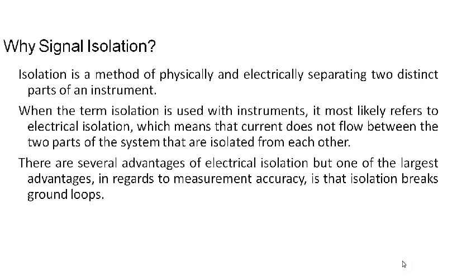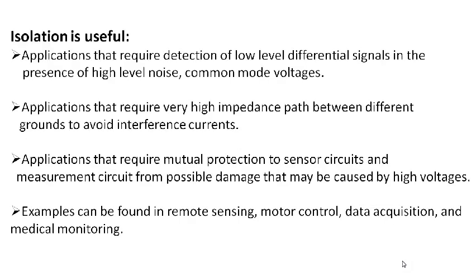Electrical isolation means there is no direct flow of current between the two parts of the circuit. There are several advantages of electrical isolation: protection to the user and the circuit from damage due to high voltage, offering high common mode rejection ratio, breaking ground loops, and improving measurement accuracy of signals especially when measuring at trace levels.